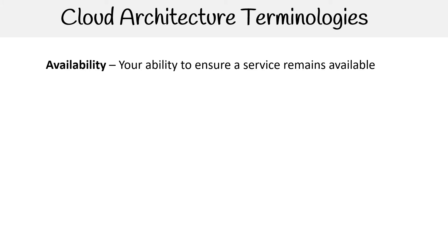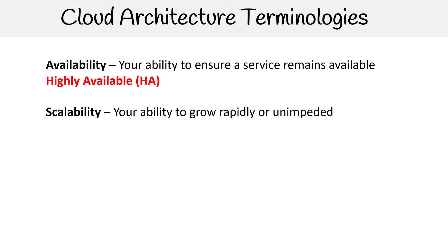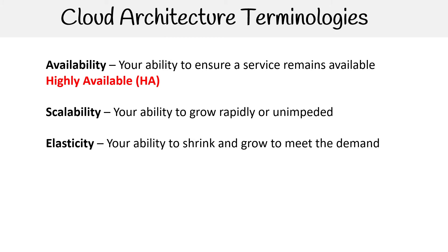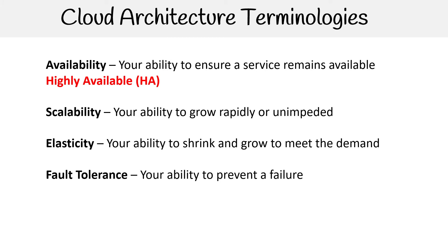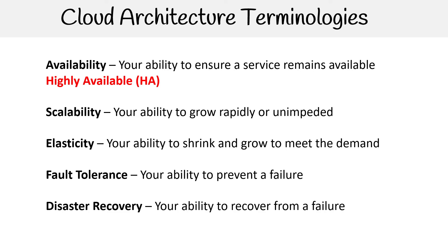First, we have availability — your ability to ensure a service remains available, also known as highly available or HA. You have scalability — your ability to rapidly grow unimpeded. You have elasticity — your ability to shrink and grow to meet the demand, and this has to do with automation. You have fault tolerance — your ability to prevent a failure. And you have disaster recovery — your ability to recover from a failure, also known as being highly durable, or DR.